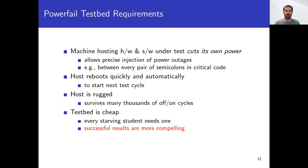What do we want in a power failure testbed? Several things. It's important that the computer under test should be able to cut its own power, allowing us to trigger power failures whenever and wherever we please — for example, between every pair of semicolons in critical code. After power is shut off, it must be restored and the machine must reboot quickly and automatically. The host machine must be rugged enough to withstand many thousands of powerful test cycles. Finally, the testbed should be cheap: we don't want anyone to have an excuse not to test, and successful tests on cheap hardware are more compelling than tests on fancy expensive hardware.